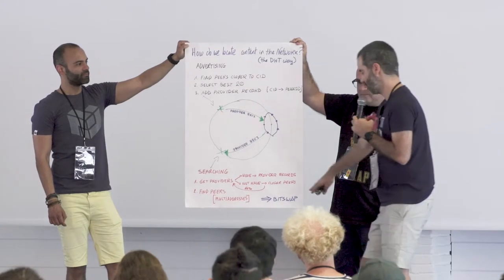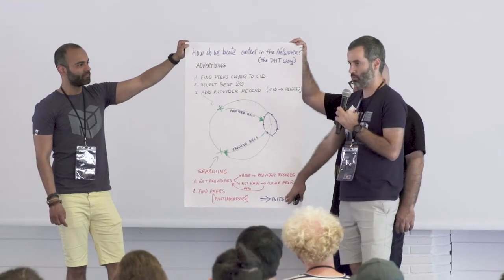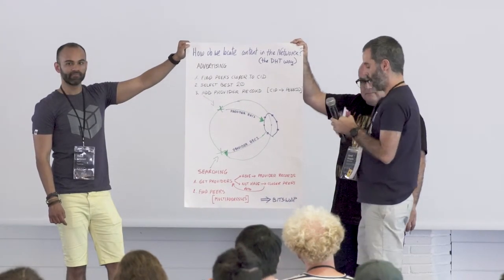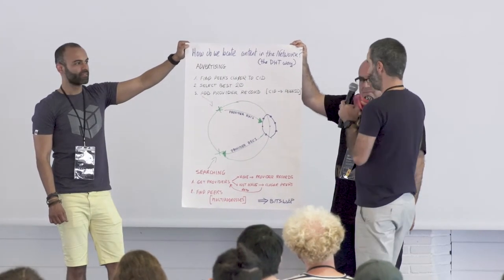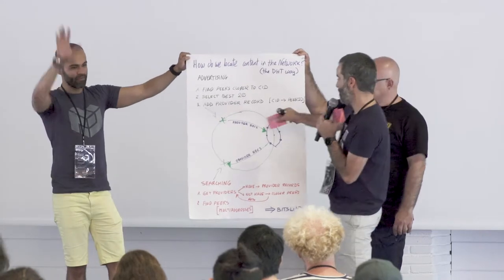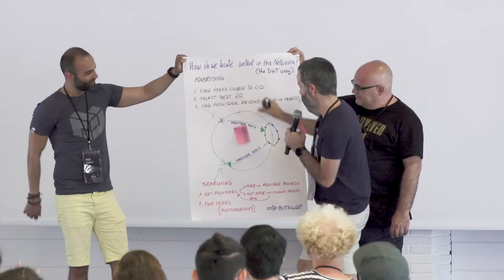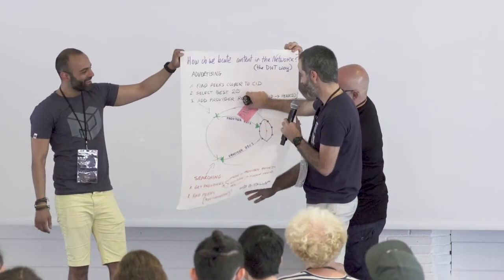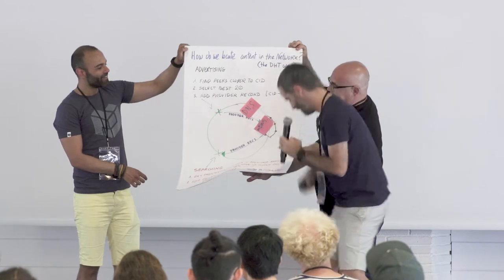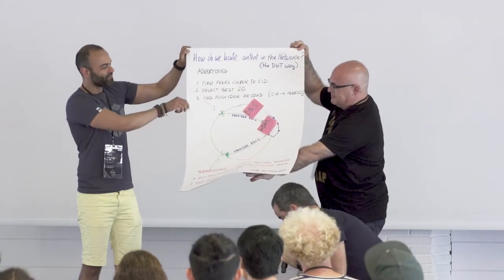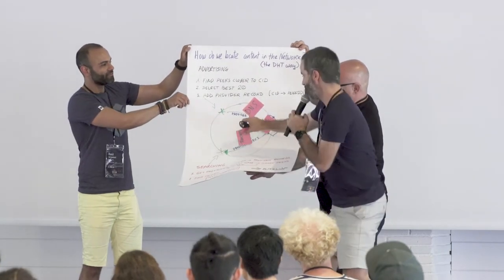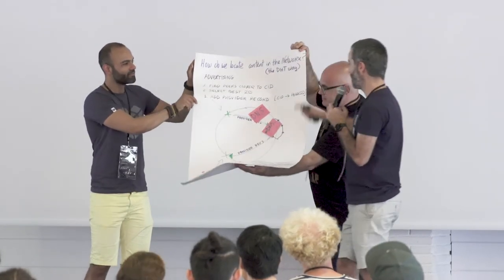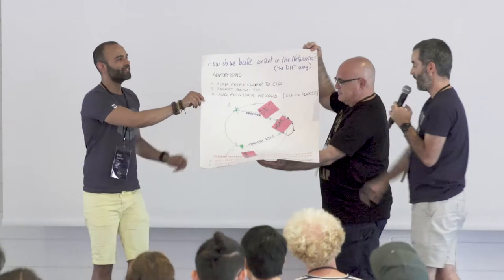After that it's bitswap. We can also have more ways to do content routing instead of the DHT.